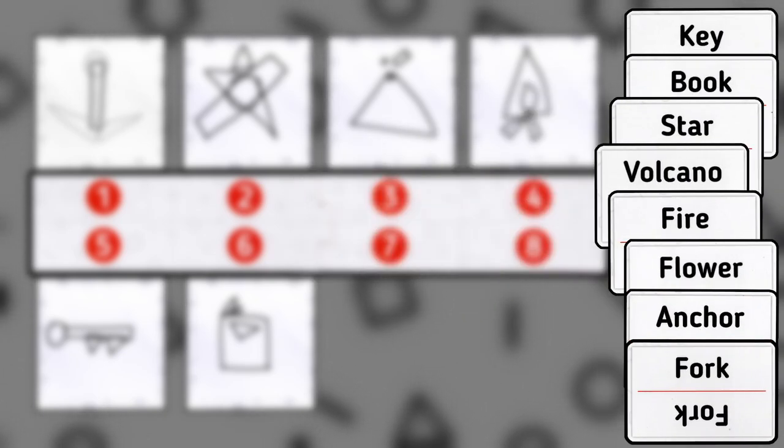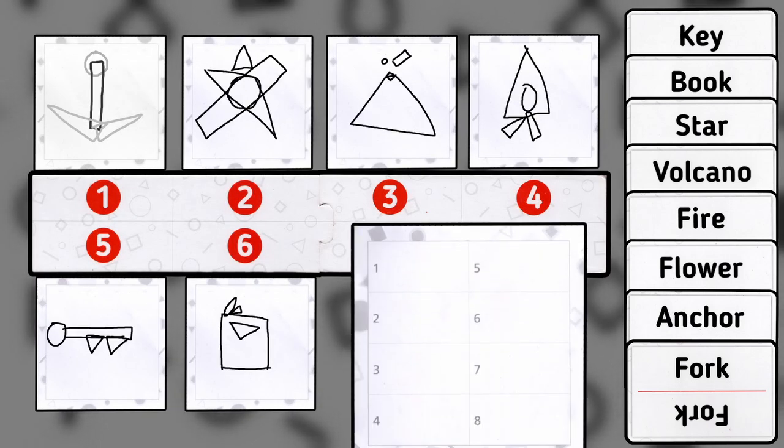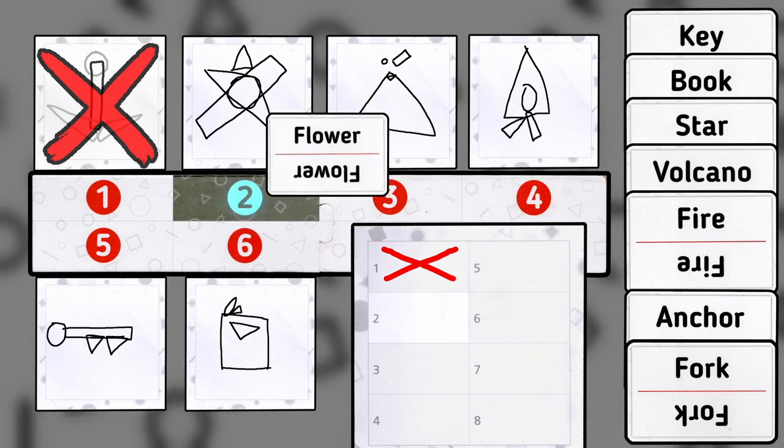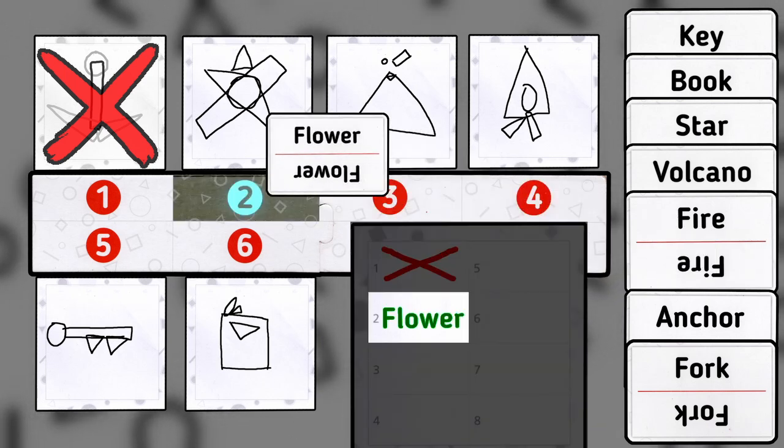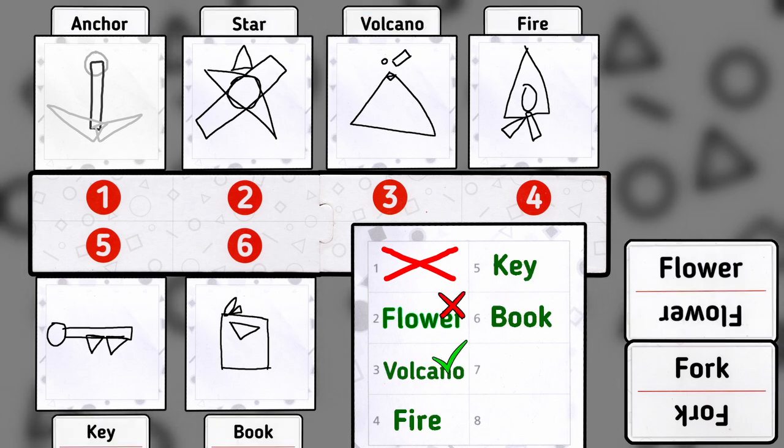And now, knowing that two of these cards are red herrings, everyone has to match each drawing to a card and write the answers on this other sheet of paper. Obviously, this excludes your own drawing. So, if you think drawing number two is a flower, you'll have to jot down flower on box number two. Once everyone is done guessing all the drawings, the answers are then revealed and everything is scored.